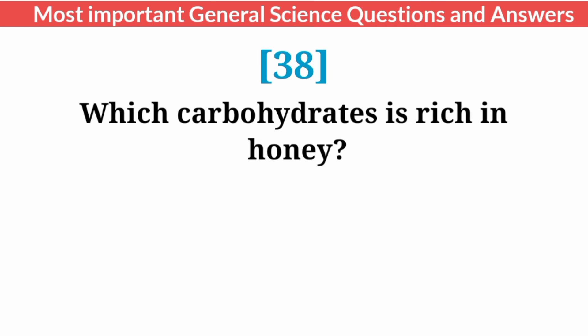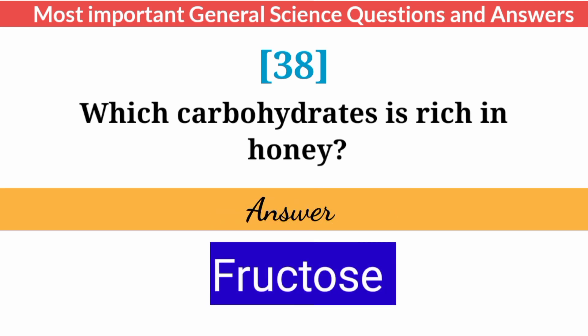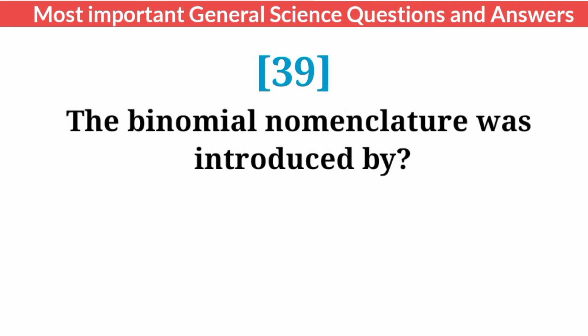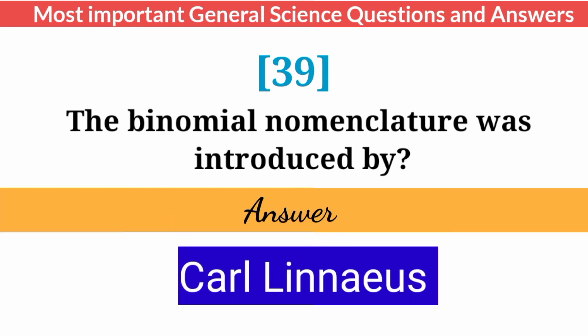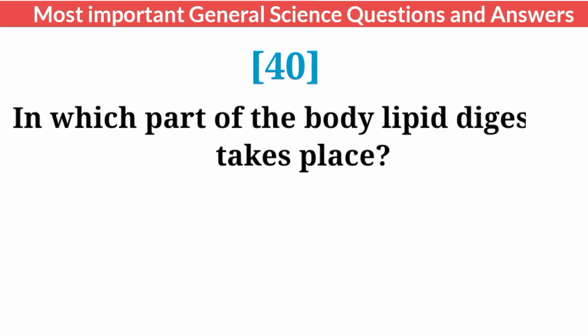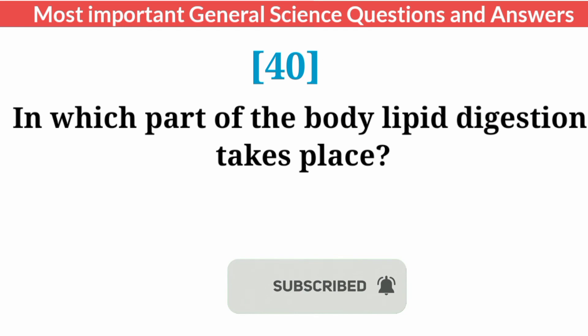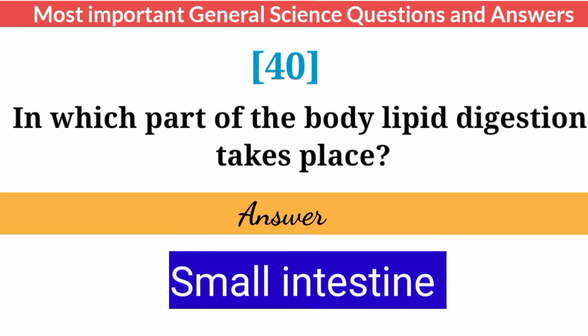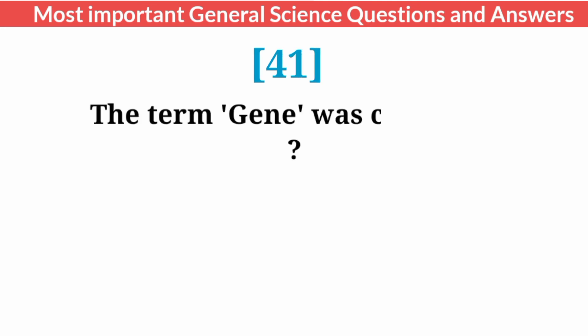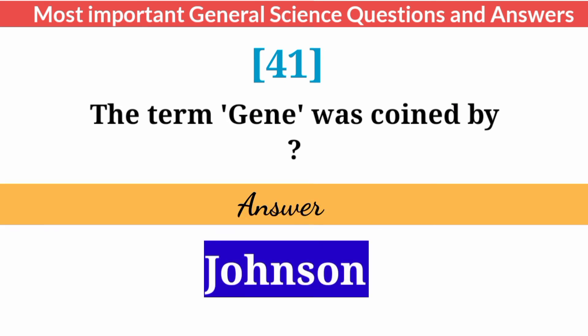Which carbohydrate is rich in honey? Answer: Fructose. The binomial nomenclature was introduced by? Answer: Carolus Linnaeus. In which part of the body does liquid digestion take place? Answer: Small intestine. The term 'gene' was coined by? Answer: Johanssen.